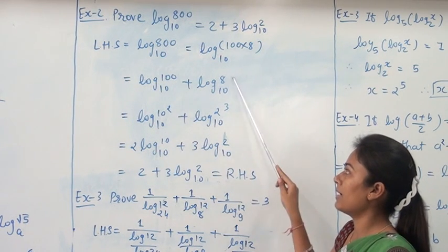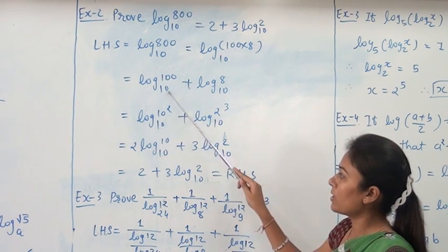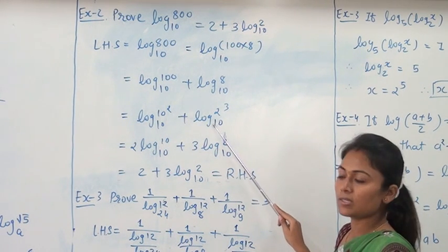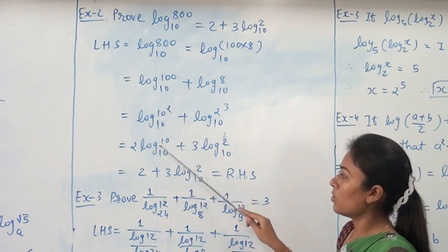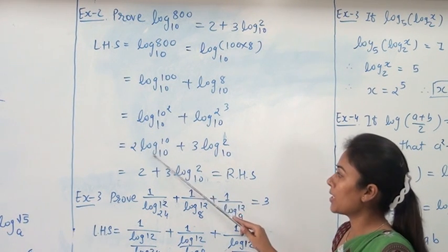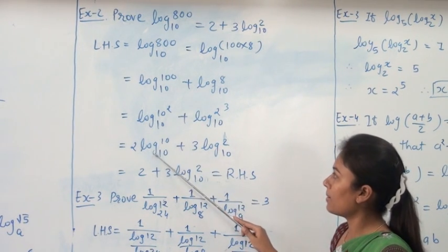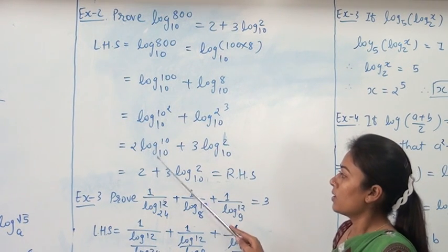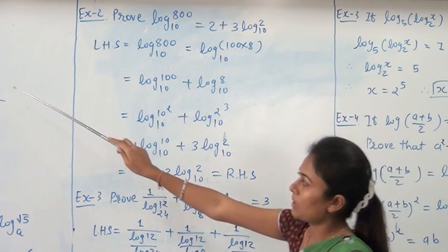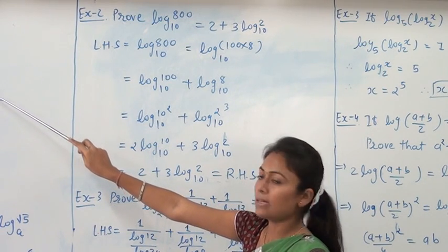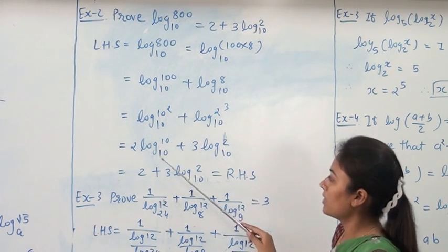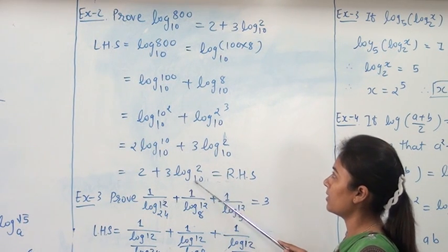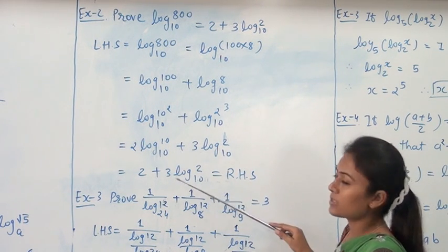We know 100 equals 10 squared and 8 equals 2 cubed. So the next step gives log 10 squared base 10 plus log 2 cubed base 10. By using the rule of logarithm of power, this becomes 2 times log 10 base 10 plus 3 times log 2 base 10. Since log 10 base 10 equals 1, we get 2 times 1 plus 3 log 2 base 10, which equals 2 plus 3 log 2 base 10 — our RHS. Hence proved.